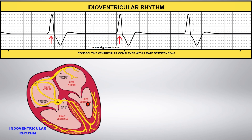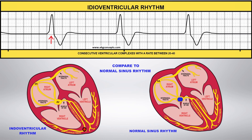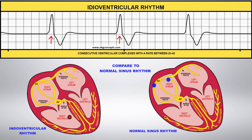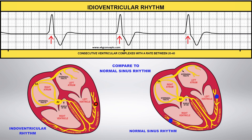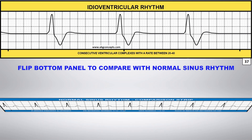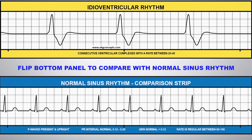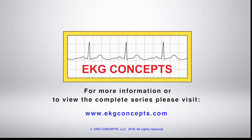Here, the ventricle is initiating a final attempt to produce an impulse. Compare this to normal sinus rhythm. You can flip the comparison strip on the bottom panel to compare this rhythm to normal sinus rhythm.